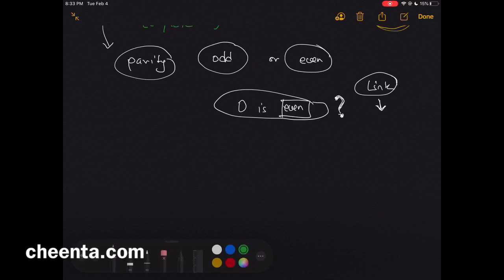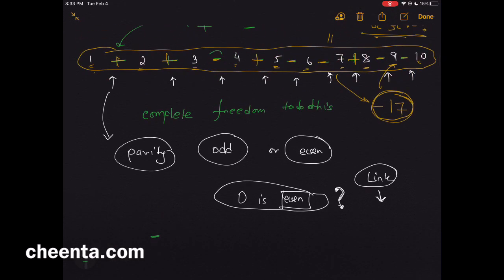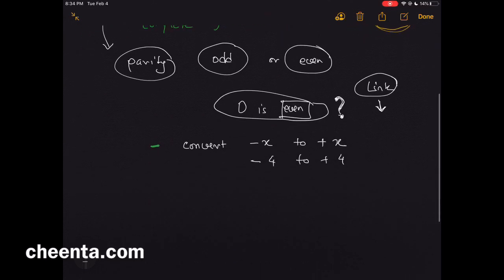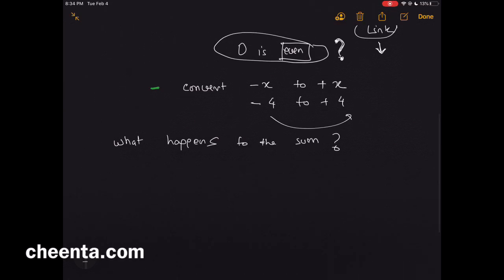And somehow we have to use that fact to solve this problem. Now let's see how. Suppose you have put a negative sign somewhere in this particular thing—we have put a negative sign, so this is negative 4. Now you want to convert this negative sign into a positive sign.